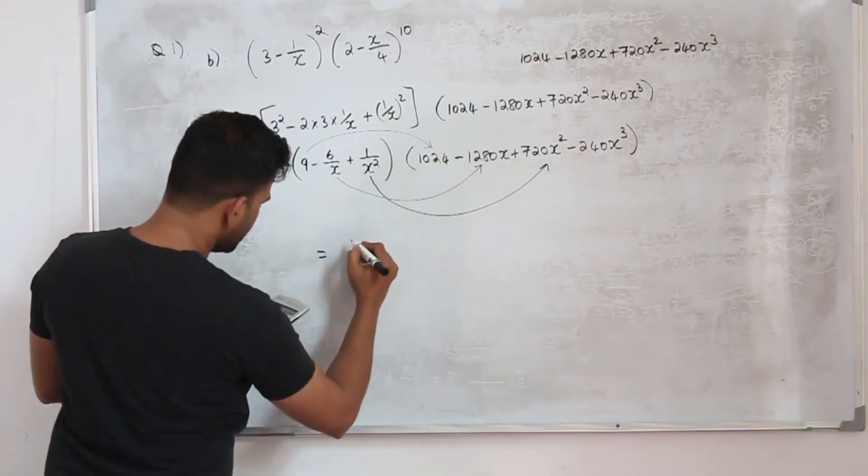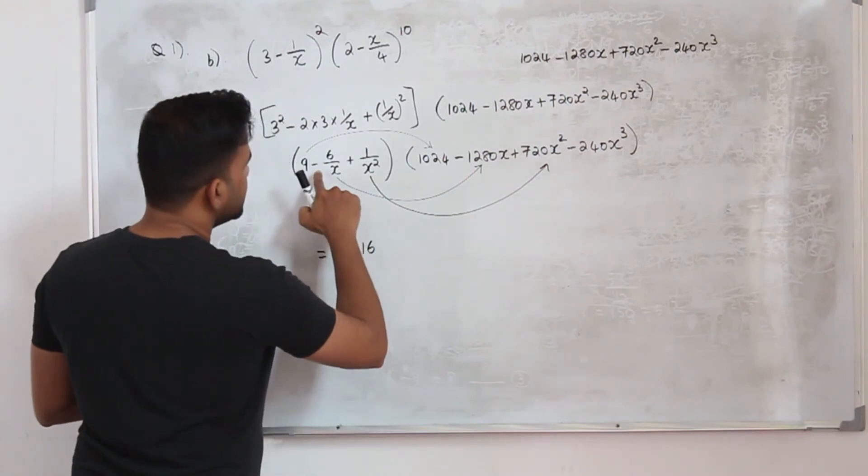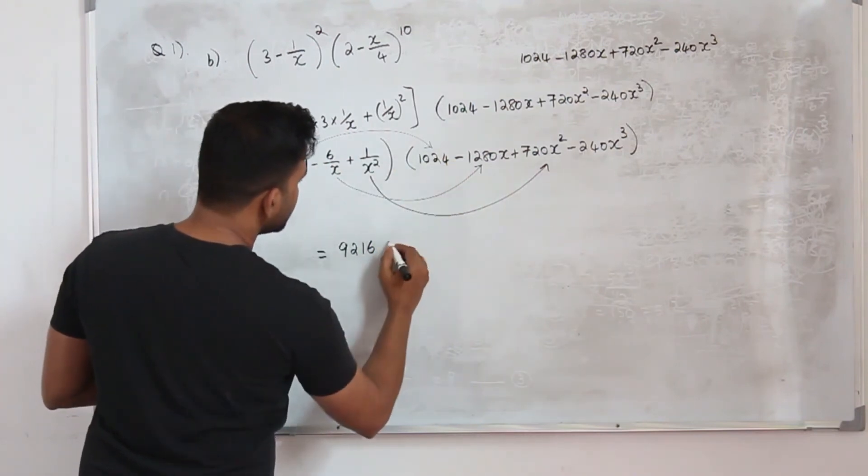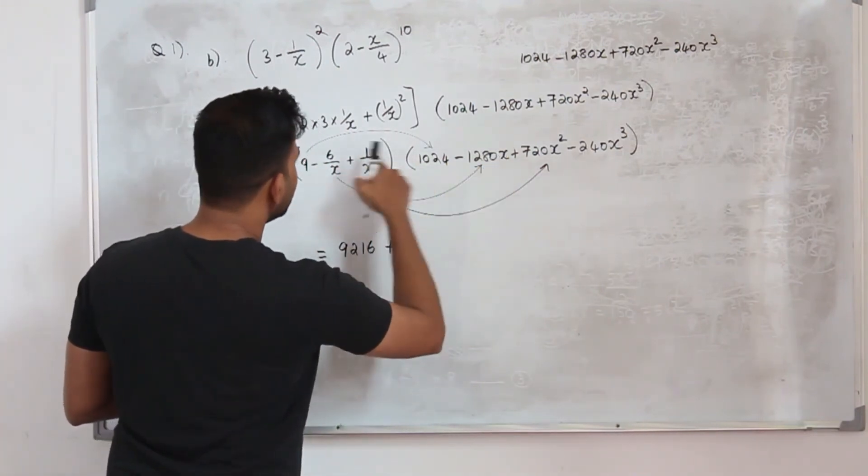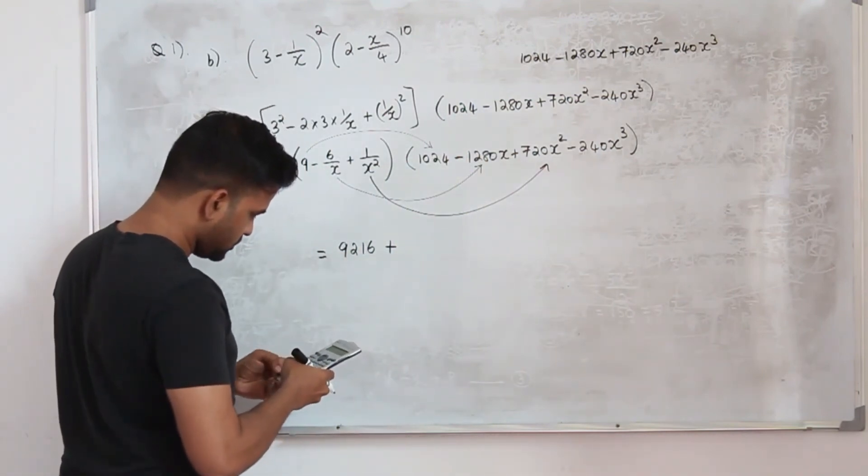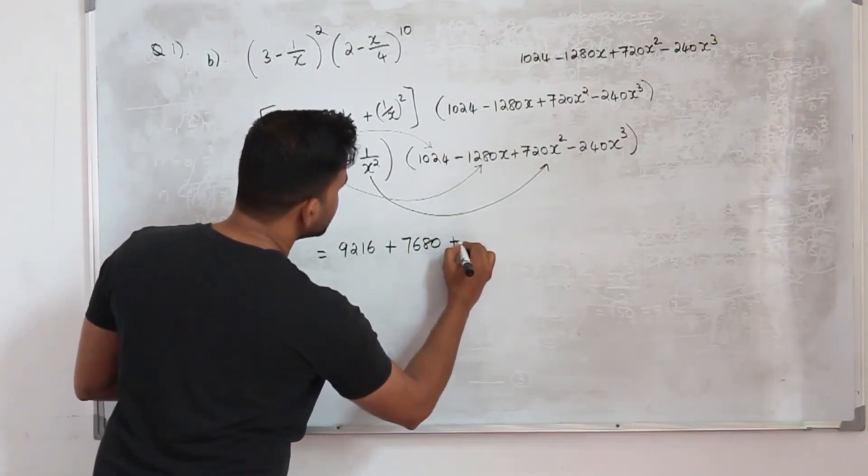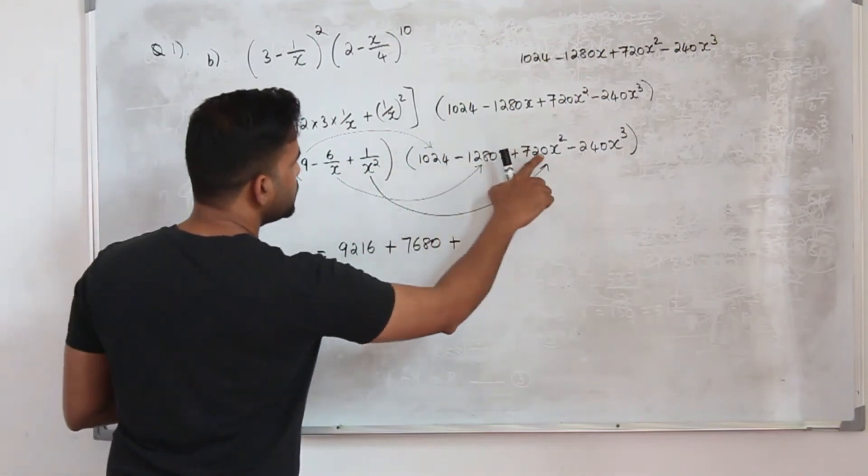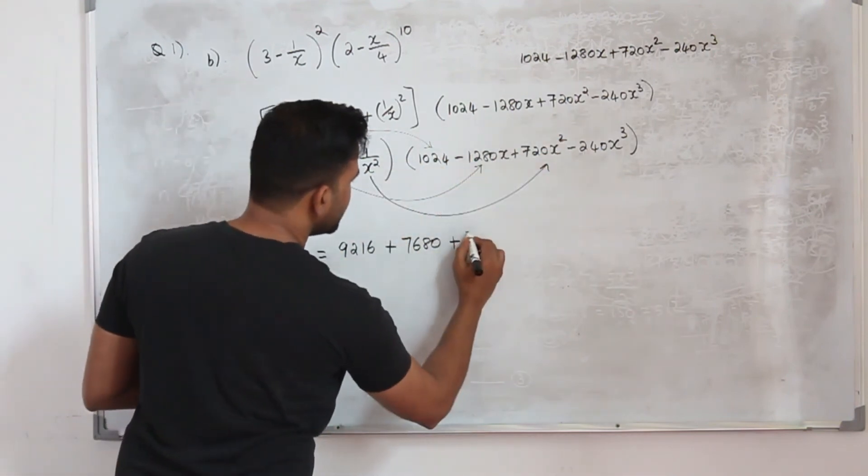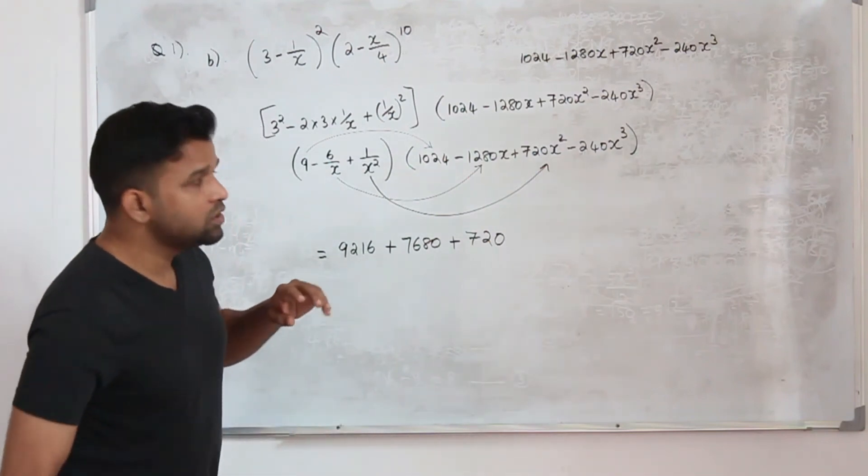So 9 times 1024 = 9216. Then minus into minus plus, your x can be cancelled, 6 times 1280 = 7680 plus. When you multiply these two terms, your x^2 will be cancelled, you have 720.